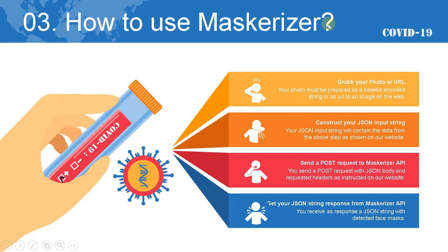How to use Maskarizer? First, grab your photo or URL — your photo must be prepared as a Base64 encoded string or as a URL to an image on the web. Then construct your JSON input string, which will contain the data from the above step as shown on our website. Send a POST request to Maskarizer API with JSON body and required headers as instructed on our website. You receive as response a JSON string with detected face masks.